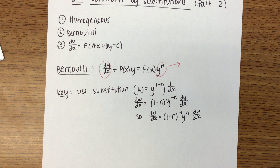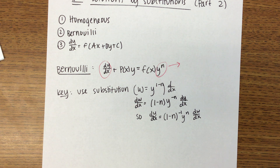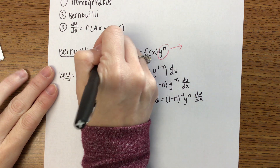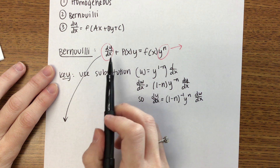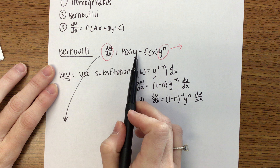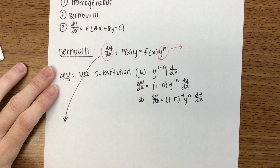It's like differentiating implicitly — you still take the derivative of y with respect to x. So what we're going to do now is go back to the equation we started with and plug in for dy/dx, y, and y to the n.